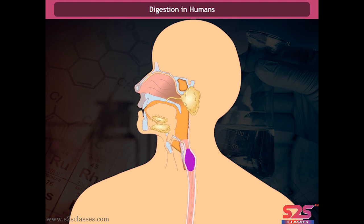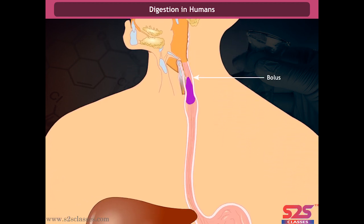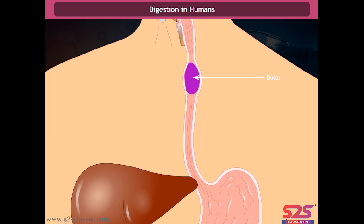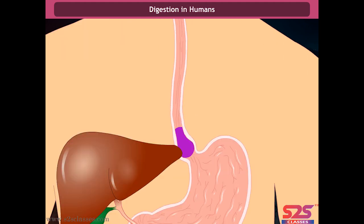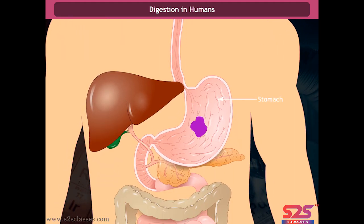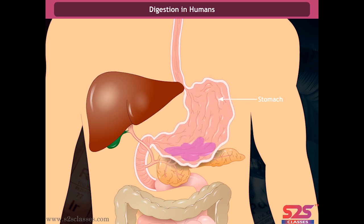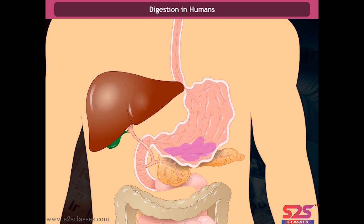The tongue helps in swallowing food. The swallowed food passes into the oesophagus, or food pipe, which runs along the neck and chest. The walls of the food pipe move to push the food down into the stomach. The stomach is a thin-walled, flattened, U-shaped bag and is the widest part of the alimentary canal.